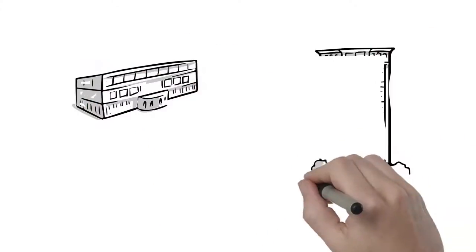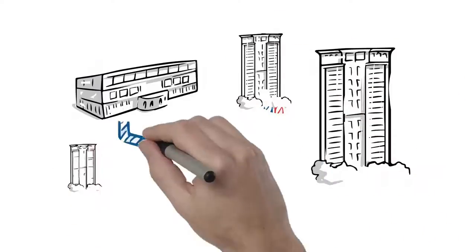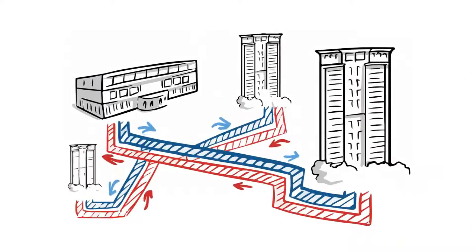Ever wondered how district cooling works? It starts at a district cooling plant where the water is chilled and pumped through the pipe distribution network at 4.4 degrees Celsius.